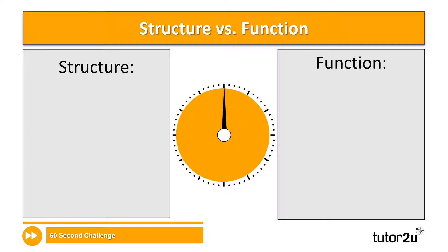Hopefully you got on with that task okay. I'm going to set you another one-minute challenge now — a quick definition challenge. I would like you to provide a definition of what the word 'structure' means in relation to neurons, and also what the word 'function' means in relation to neurons. This goes into question two in your booklet, so you have one minute to complete that task beginning now.